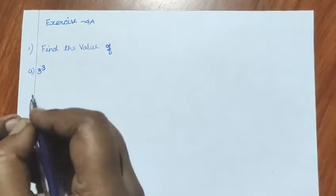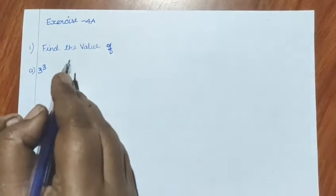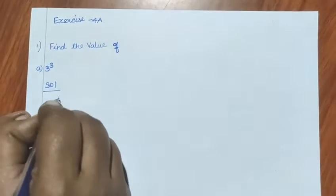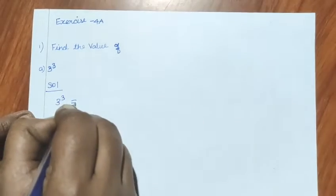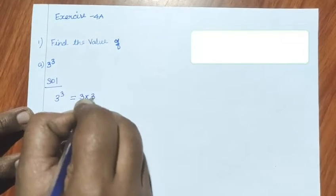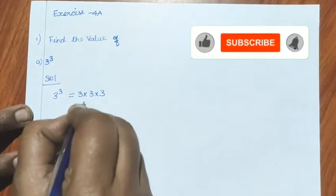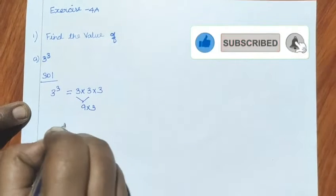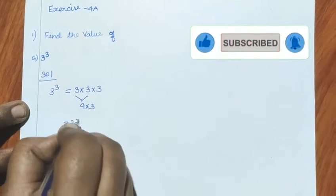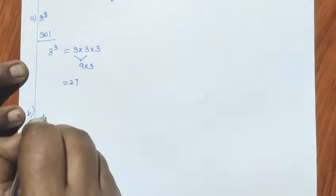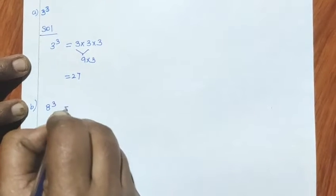Exercise 4A, first sum: find the values. 3 cubed — 3 times 3 times 3: 3 threes are 9, 9 threes are 27. Next, B sum: 8 cubed.